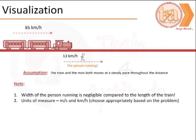Let us now begin visualizing the problem. The train is moving at 85 km per hour in the direction as shown.